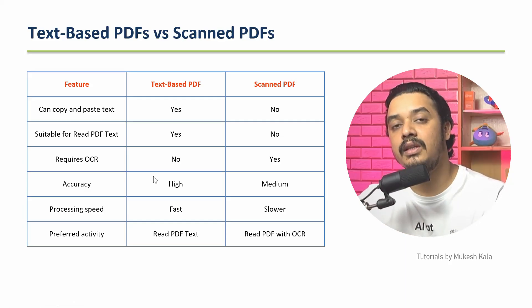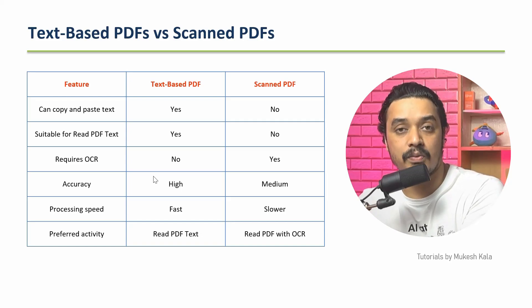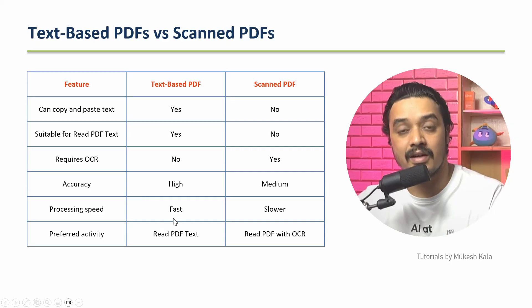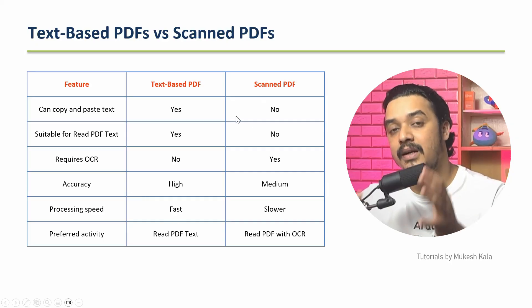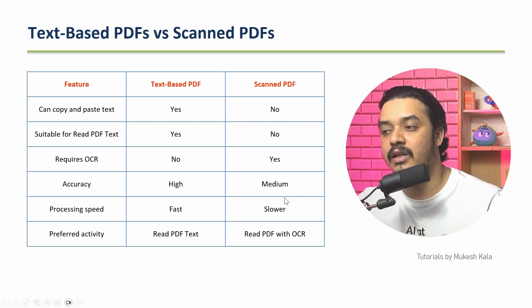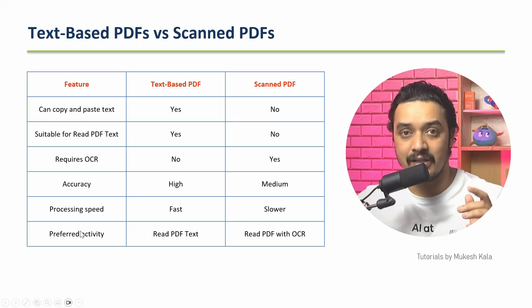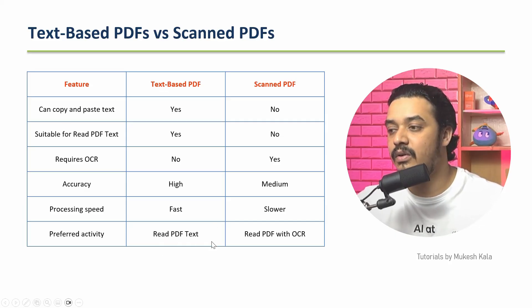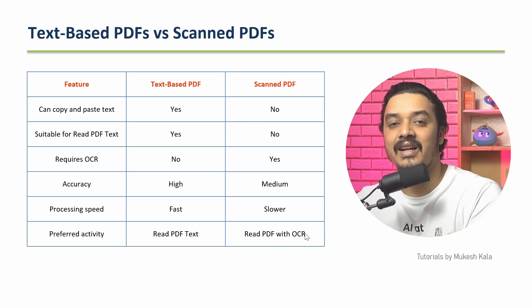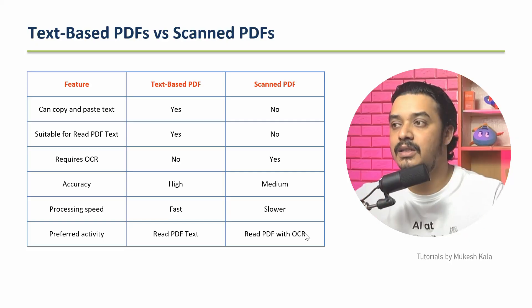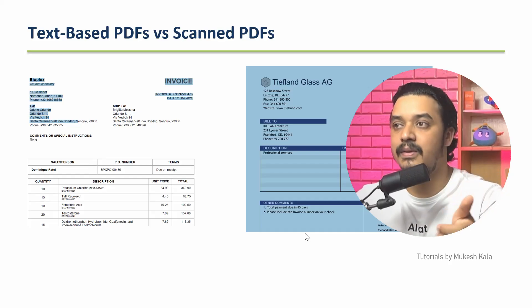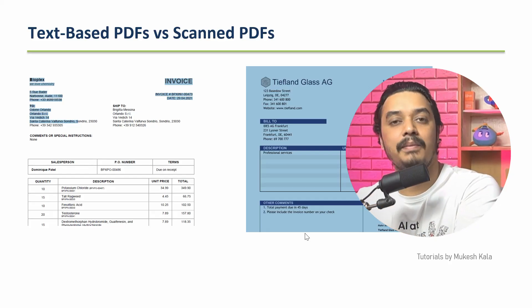Depending on the capability of the OCR engine, you will get different output quality. UiPath supports different OCR engines — ABBYY, UiPath OCR, Microsoft OCR, Google OCR. Processing speed is also different: text-based is fast because you read directly, while scanned PDFs pass an image to an OCR engine, making it slower. In summary: text-based uses Read PDF Text; scanned uses Read PDF with OCR.